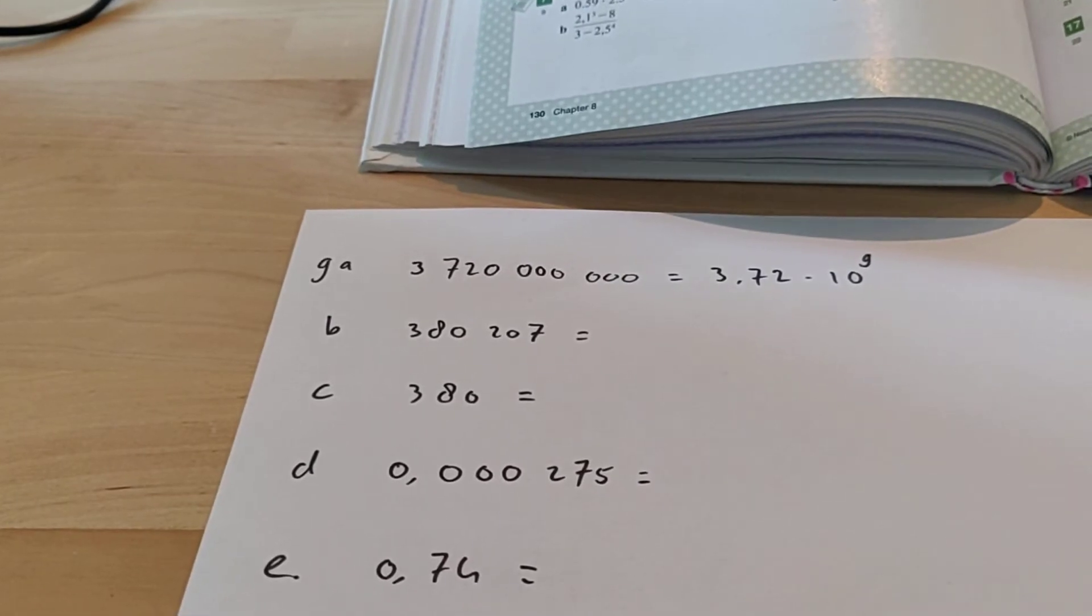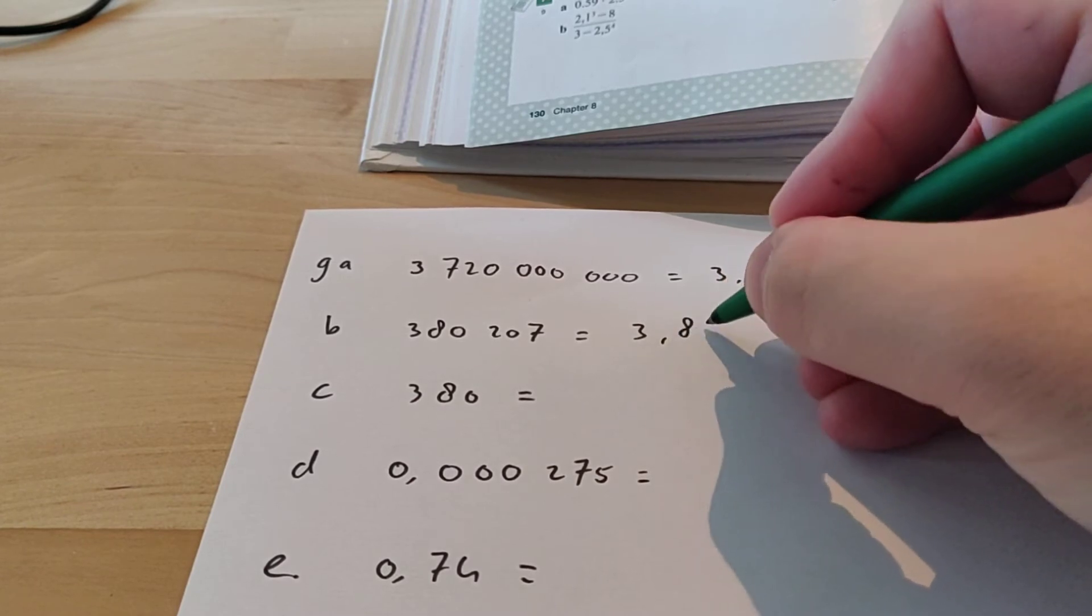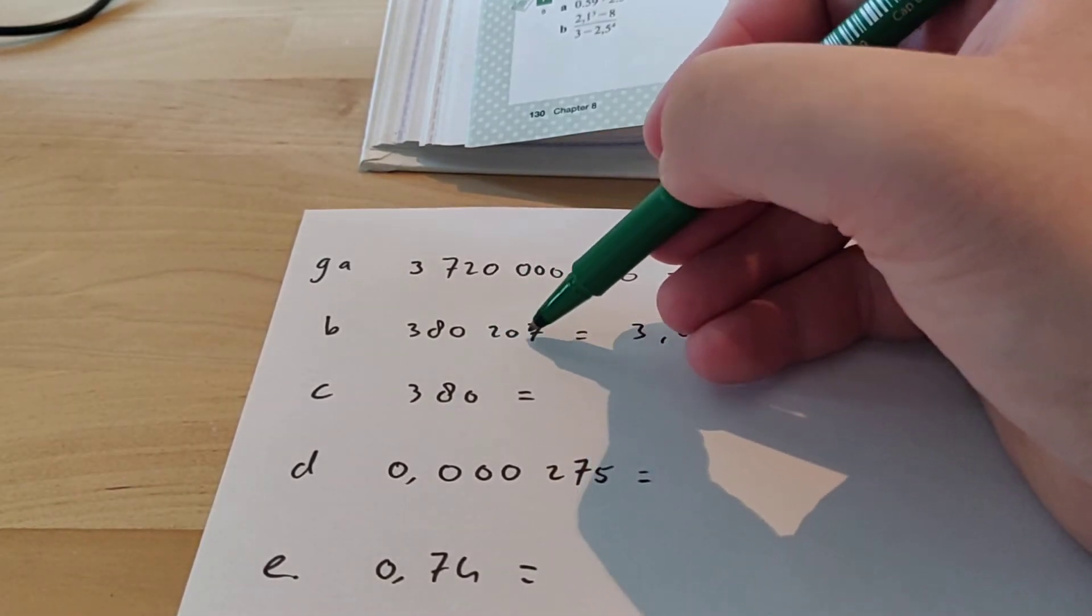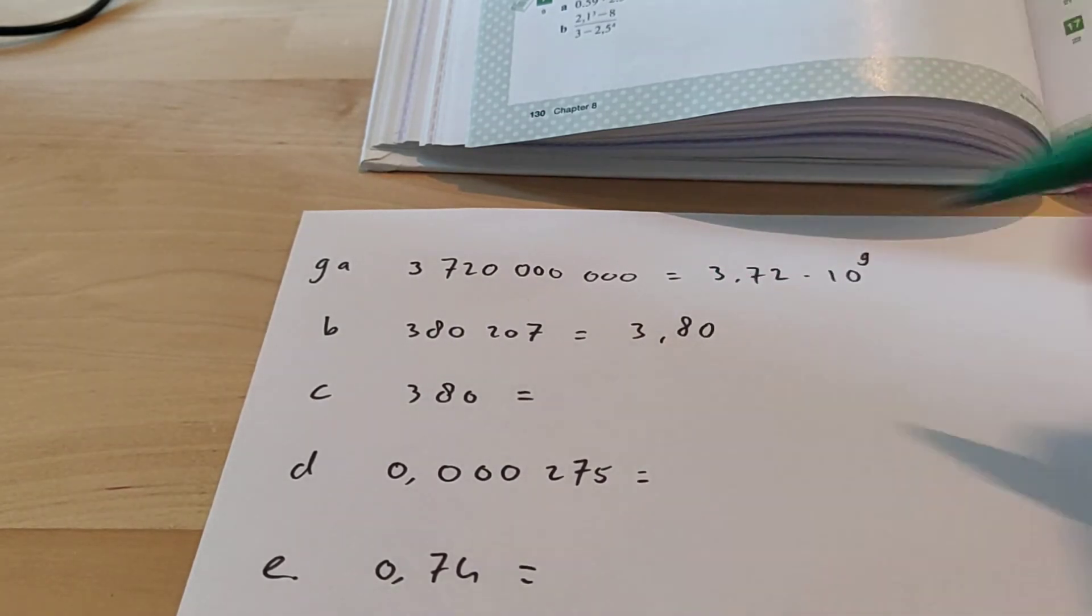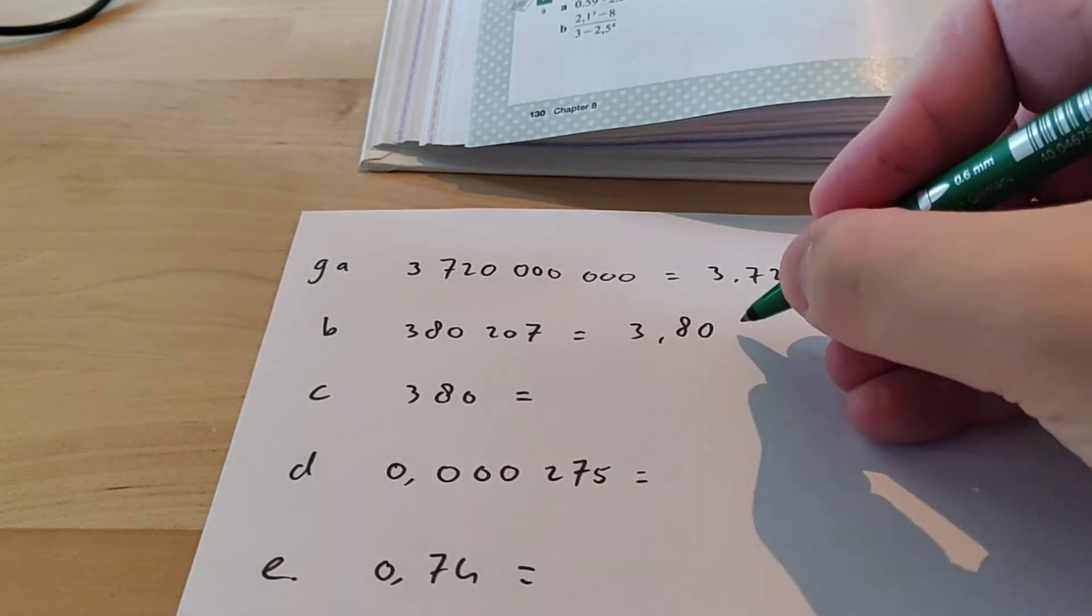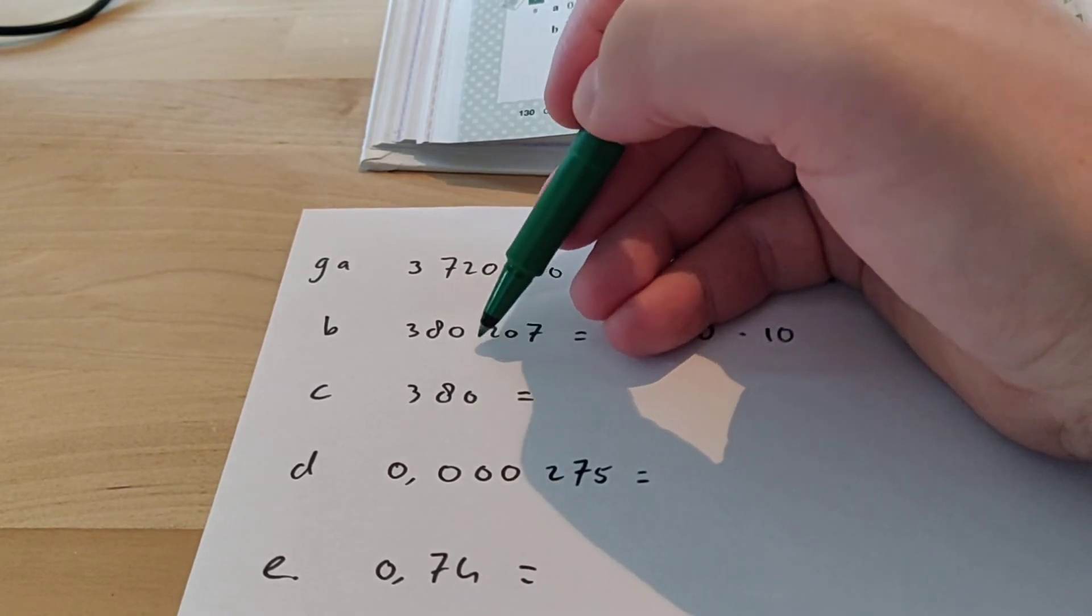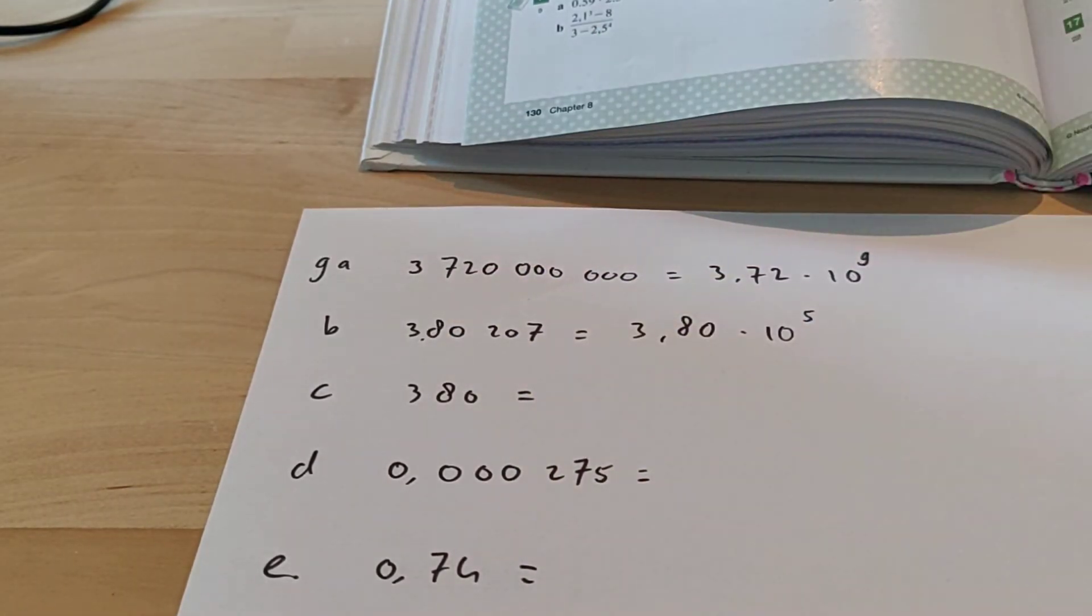Exercise B. The first digit we see is also a 3 here. So 3.80. You always have to round off to two decimal places, so we're going to ignore the 207. We just write down two decimal places, and that is it. Times 10 to the power of, and then we're going to count 1, 2, 3, 4, 5. So, to the power of 5.